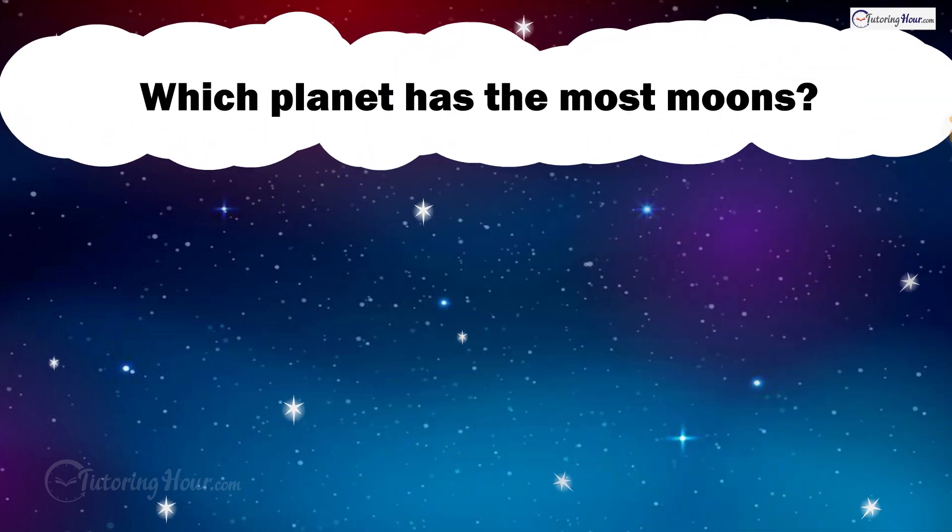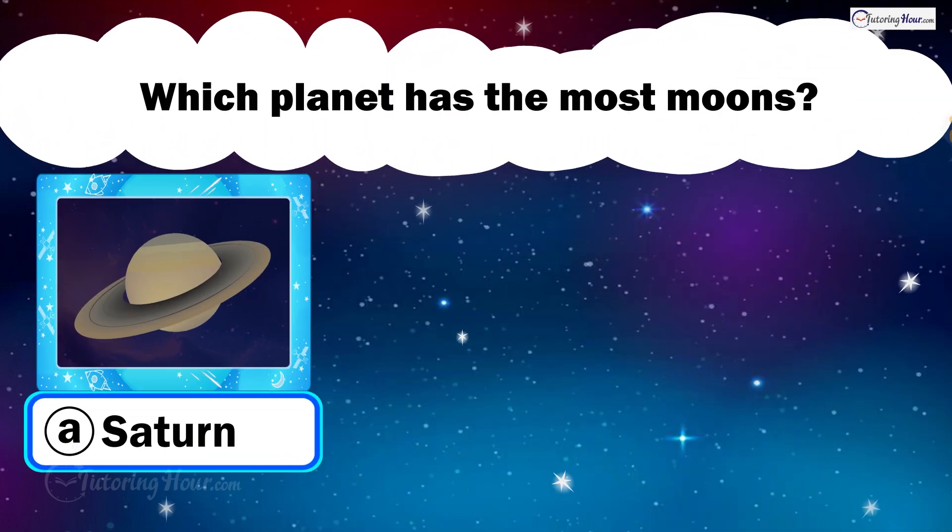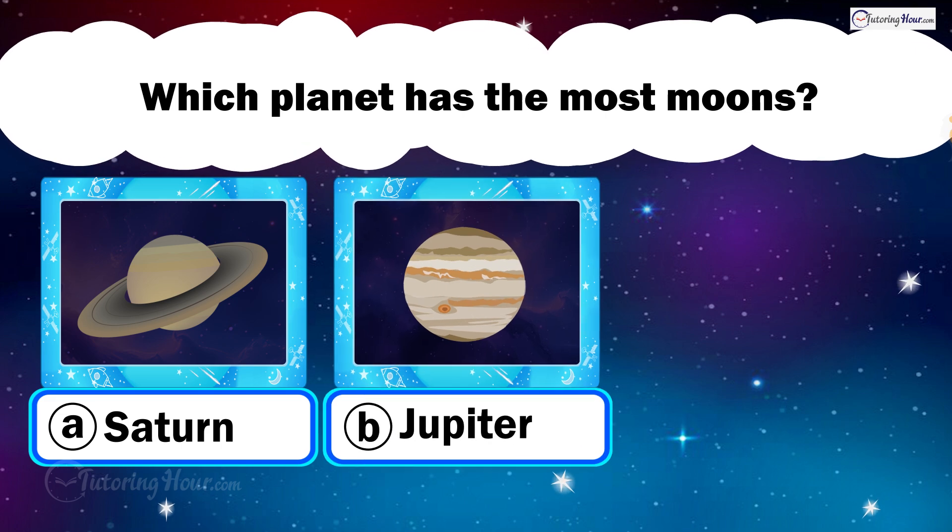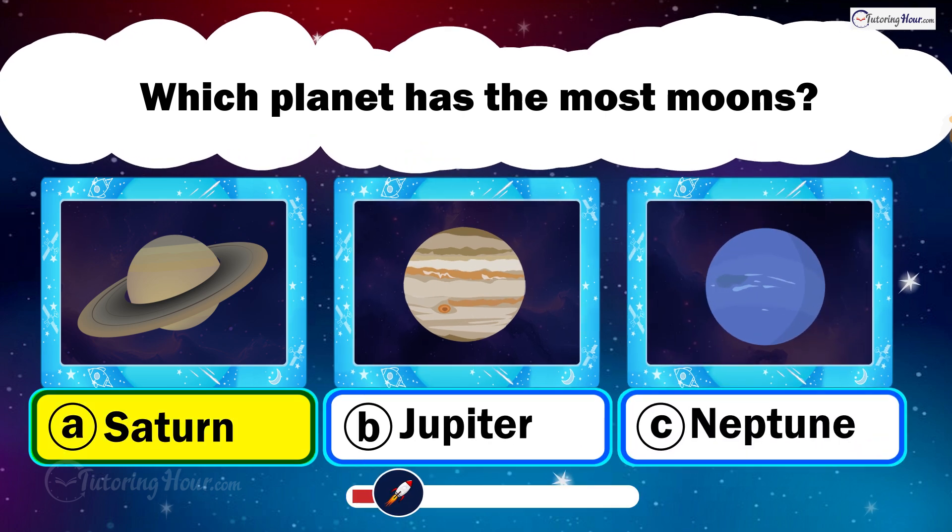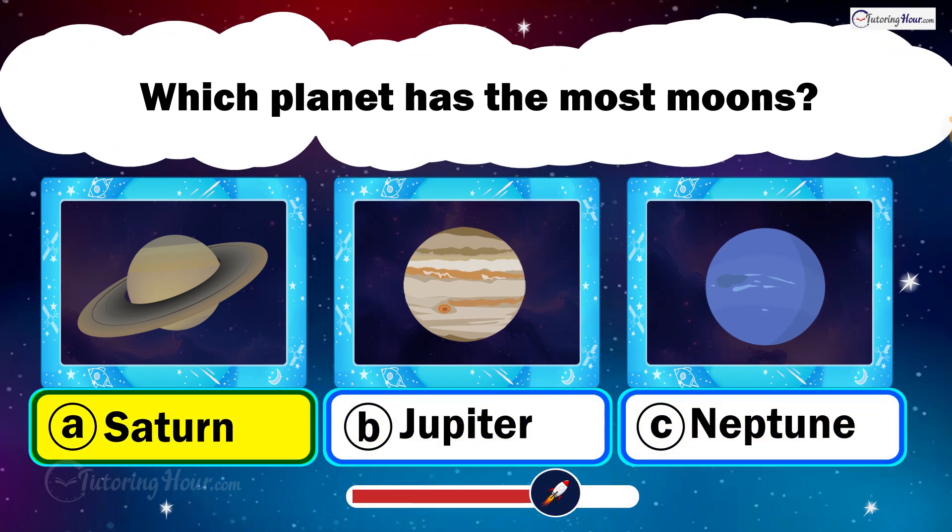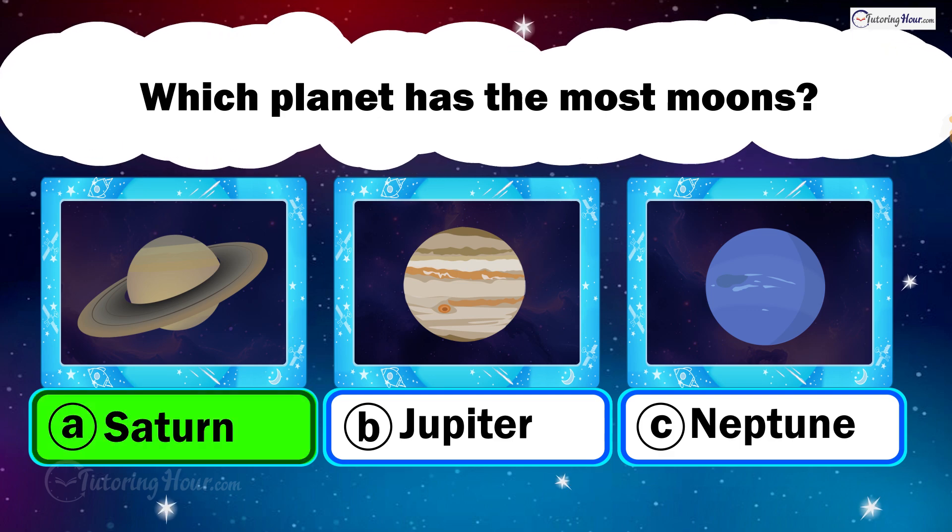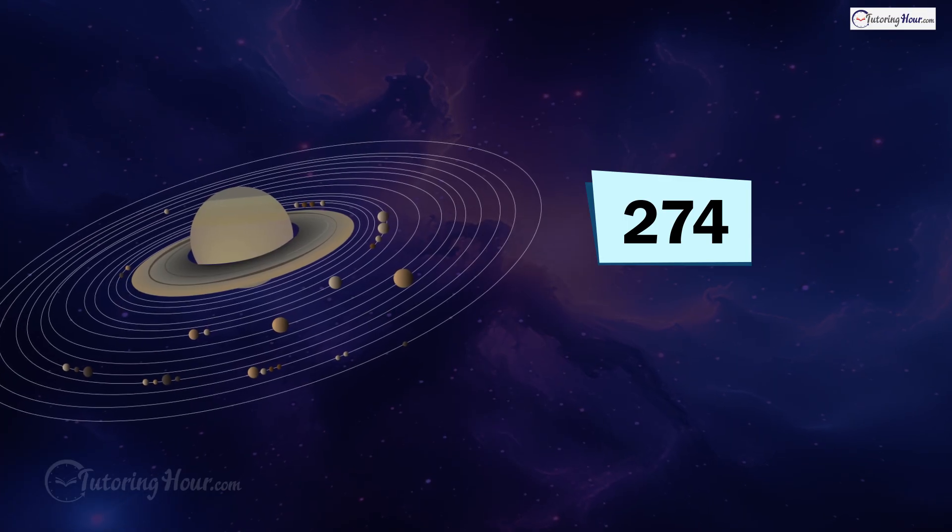Which planet has the most moons? Is it A. Saturn, B. Jupiter, or C. Neptune? The correct answer is Saturn. Saturn has 274 moons.